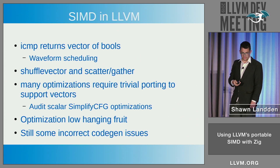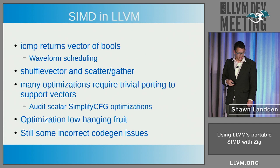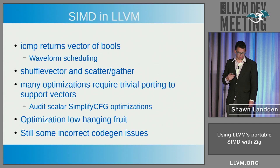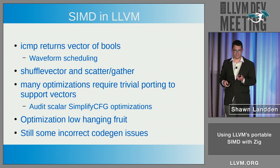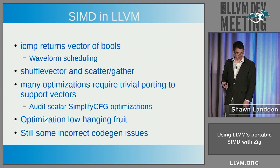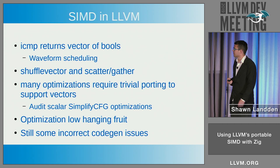You could have shuffle vector; you also have scatter and gather. Not all the optimizations are correct right now. There are also some codegen issues if you use weird sizes like an I3, or you have really weird vector widths. But as long as it's normal, I haven't run into any codegen problems.